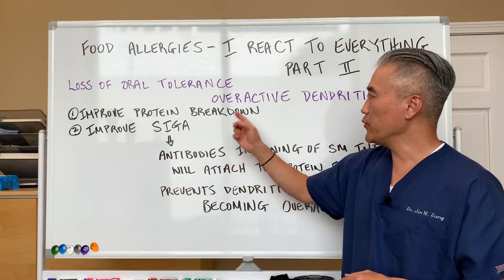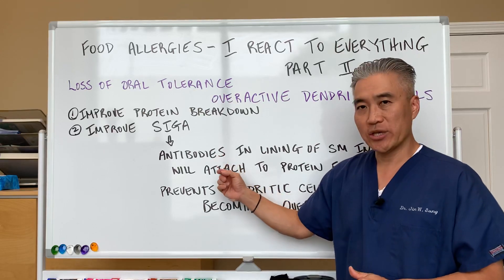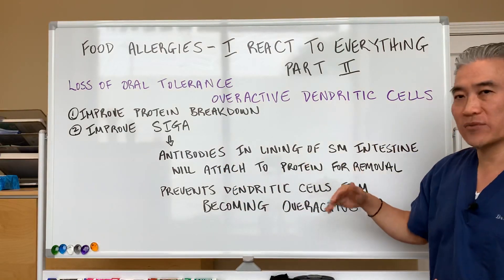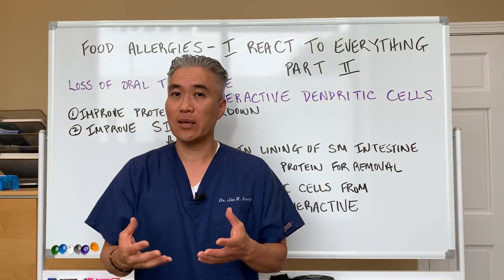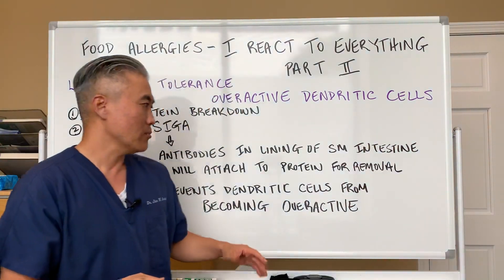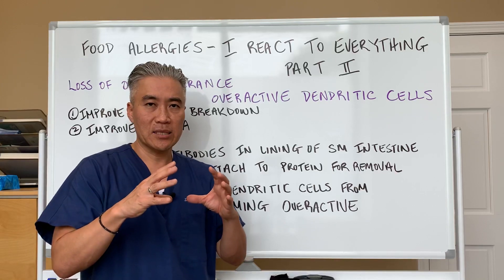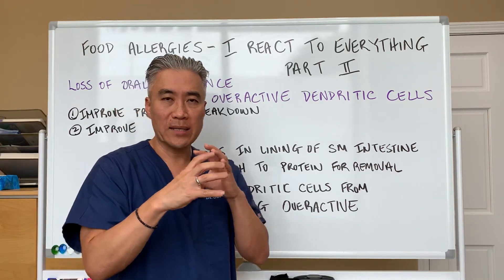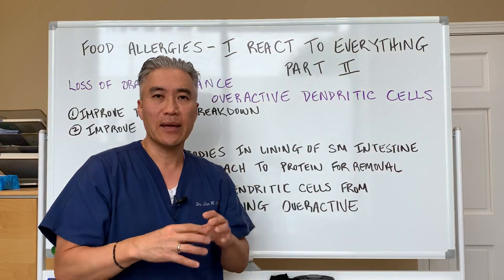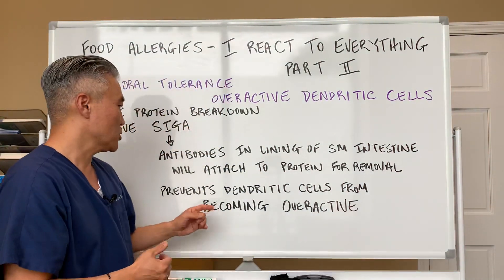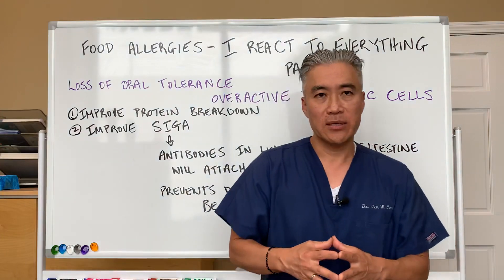Another way to improve overactive dendritic cells is to improve secretory IgA. Secretory IgAs are antibodies found in the lining of the small intestine. They attach to foreign proteins — like large food proteins — and as the secretory IgA binds to and surrounds the protein, the dendritic cells can't sample it and have an overt immune response. So it prevents the dendritic cells from becoming overactive and protects the gut.